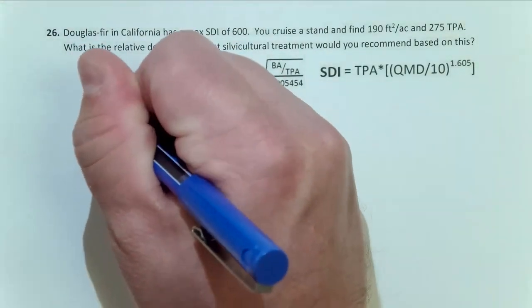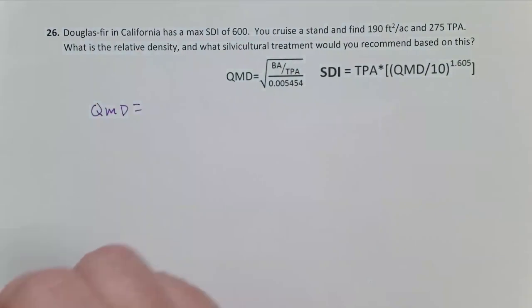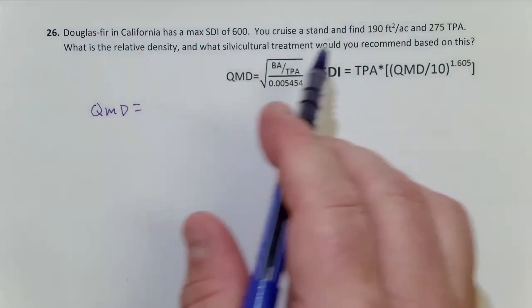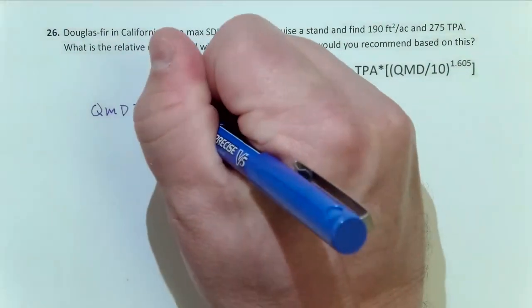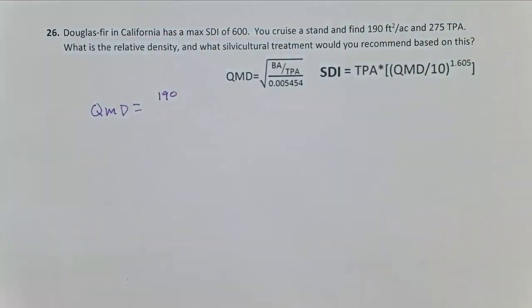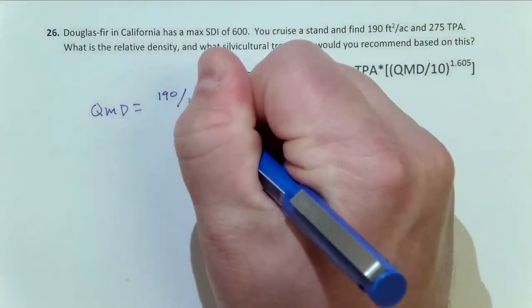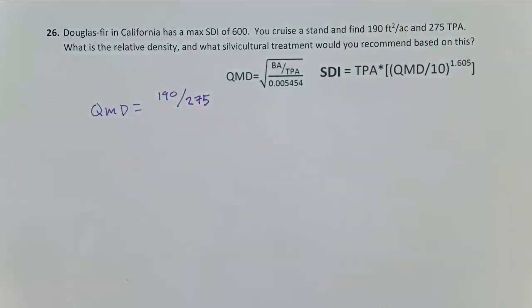We've been given the equation. QMD equals, in this case, basal area 190 divided by trees per acre 275. So that's our first step.